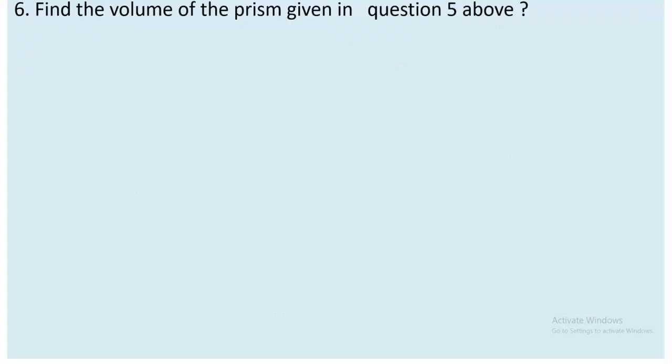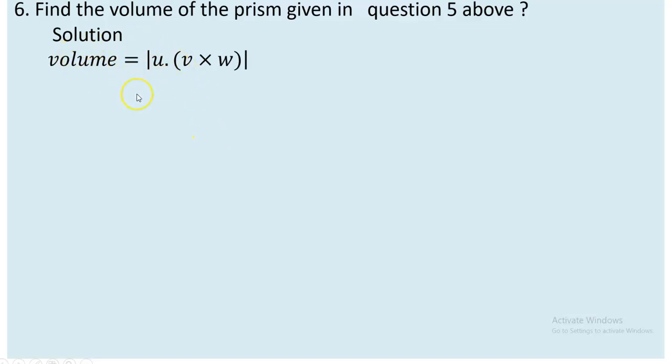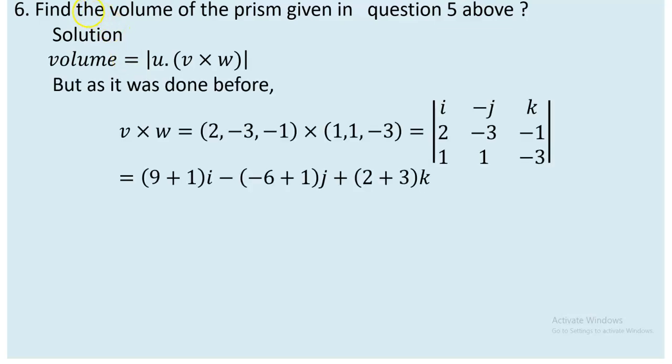What comes next is question number six, where you are asked to find the volume of the same prism given in question five. The edges are already determined. To find the volume, we carry out the absolute value of the triple product of U, V, and W. You are free to use another approach like V·(U×W) or W·(U×V) as you wish — as long as you take the absolute value. The result is the same either way.